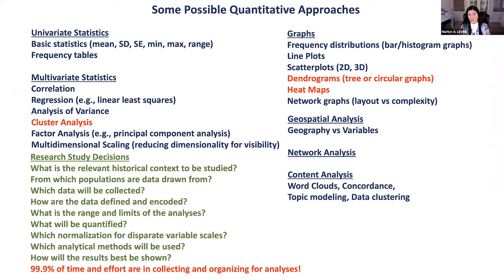Here are some possible quantitative approaches. Basically, you have univariate statistics, multivariate statistics — cluster analysis is part of multivariate statistics, but you can also have factor analysis or principal component analysis. I have put key articles on these areas in a file. There is also multidimensional scaling. You can do graphs, frequency distributions, dendrograms — tree or circular graphs. We are going to look at heat maps, and there is also geospatial analysis, network analysis, and content analysis.